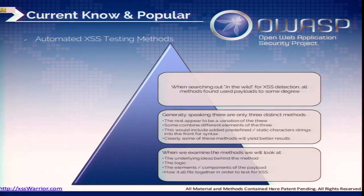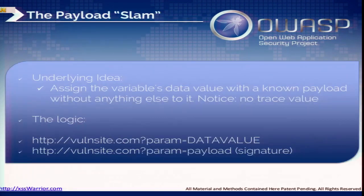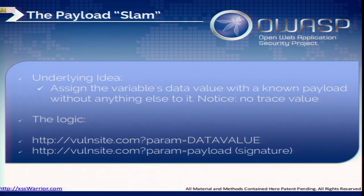Now I'm going to go into the techniques that these scanners use with those payloads. Everything out there is a variation of the three techniques. The first is what I call the payload slam: your scanner finds a parameter with a data value, does a quick substitution, slams it in, does the replace, and tries to identify if there's a vulnerability. There's no tracing value, no callback, nothing. That's one method that's out there.